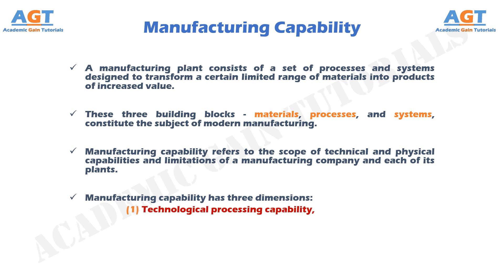Technological process and capability: The technological processing capability of a plant or company is its available set of manufacturing processes. Certain plants perform machining operations, others roll steel billets into sheet stock, and others build automobiles. A machine shop cannot roll steel, and a rolling mill cannot build cars. The underlying feature that distinguishes these plants is the processes they can perform. Technological processing capability is closely related to material type — certain processes are suited to certain materials. By specializing in a certain process or group of processes, the plant is simultaneously specializing in certain material types.